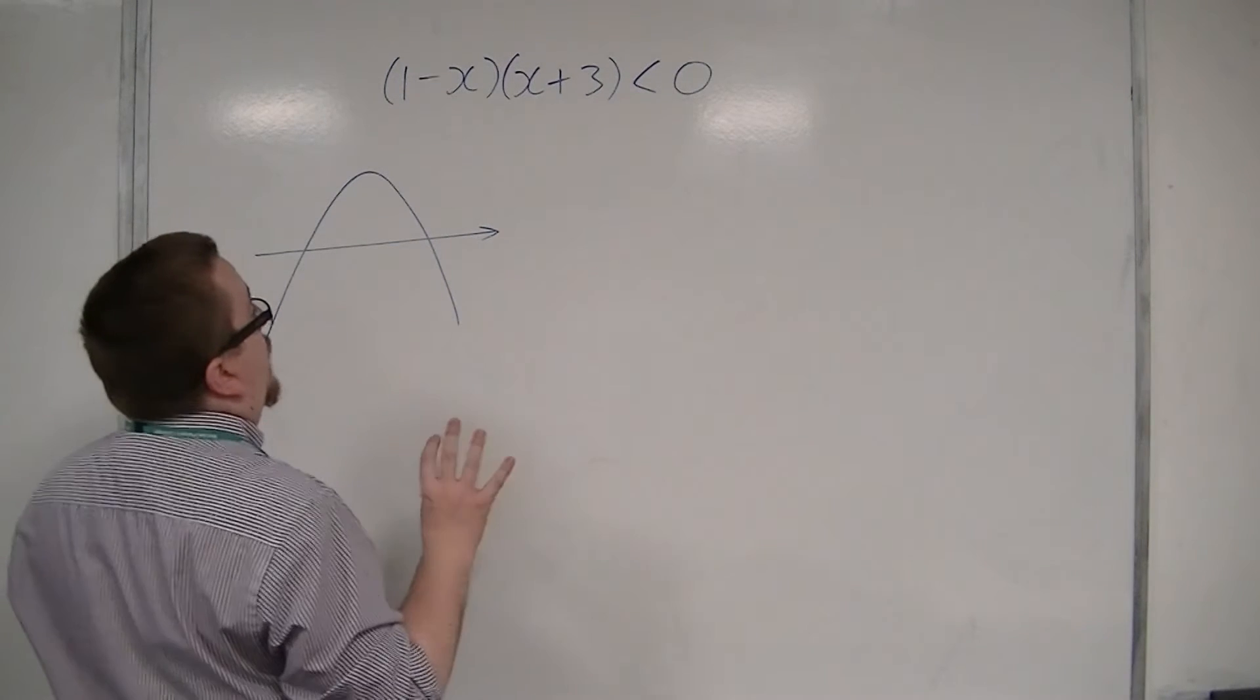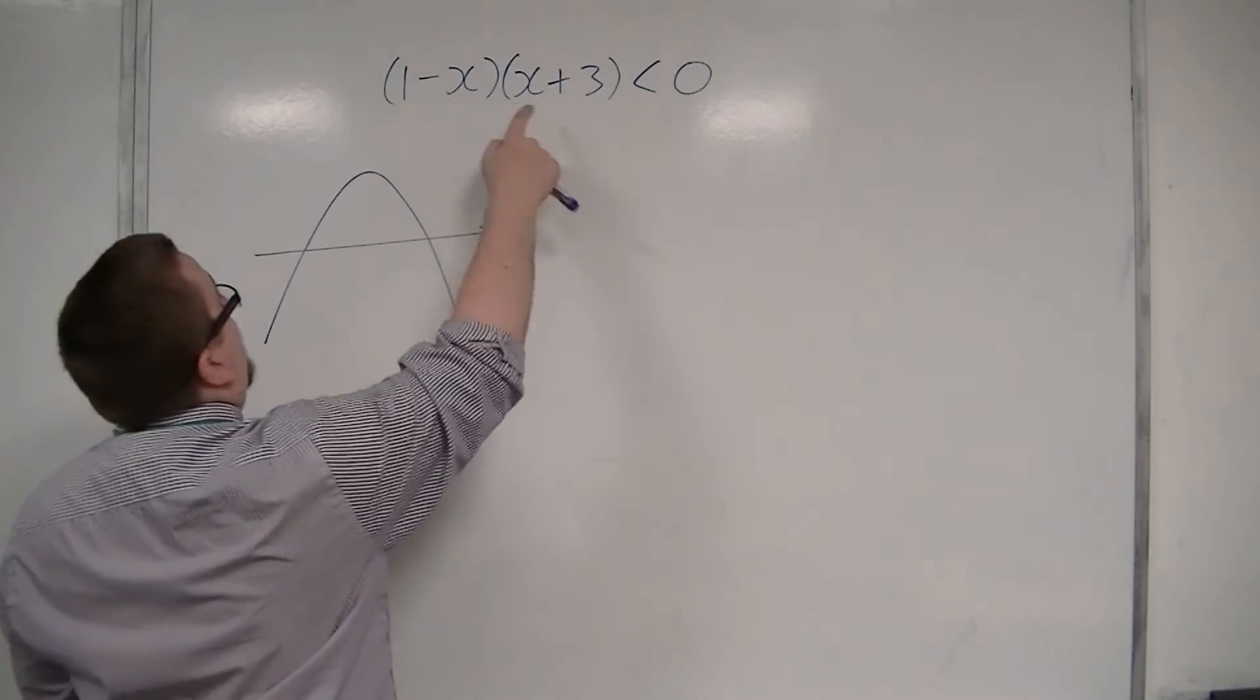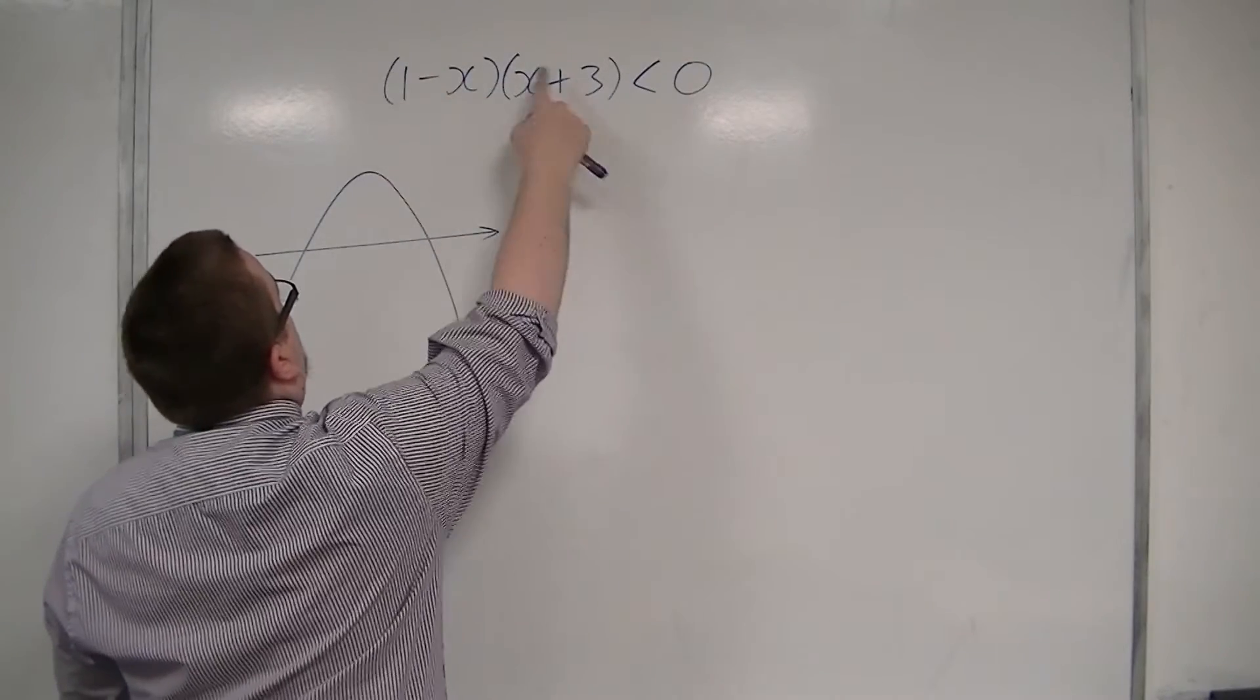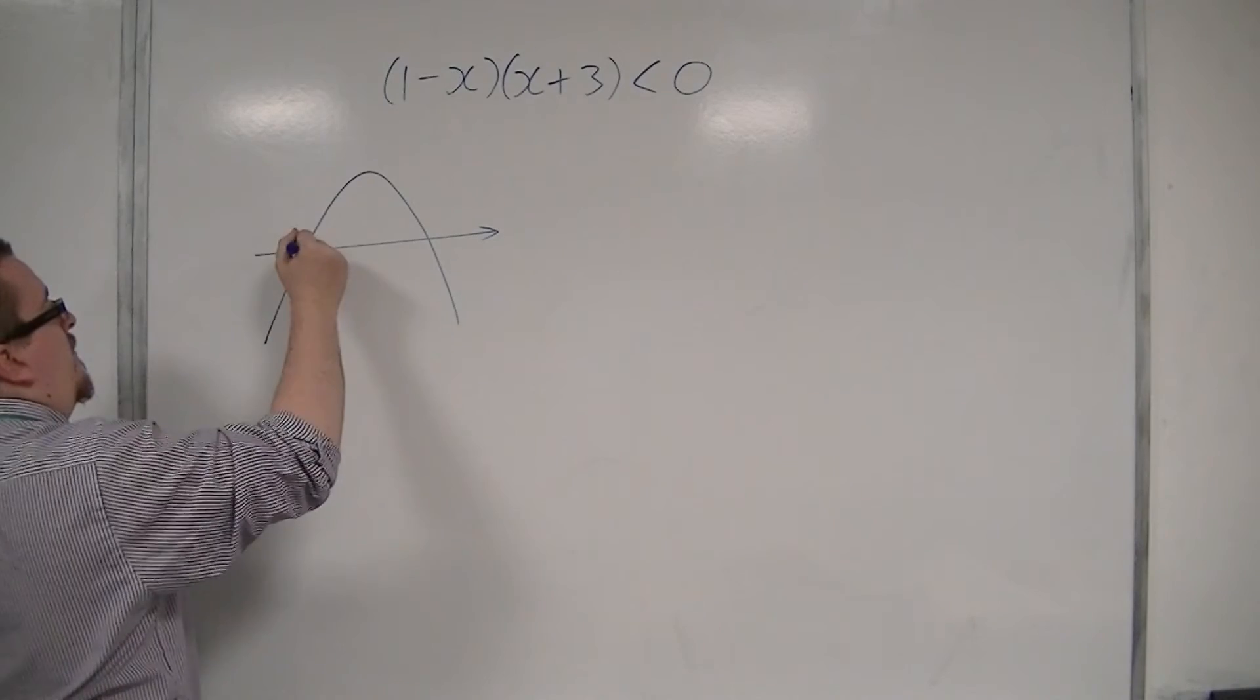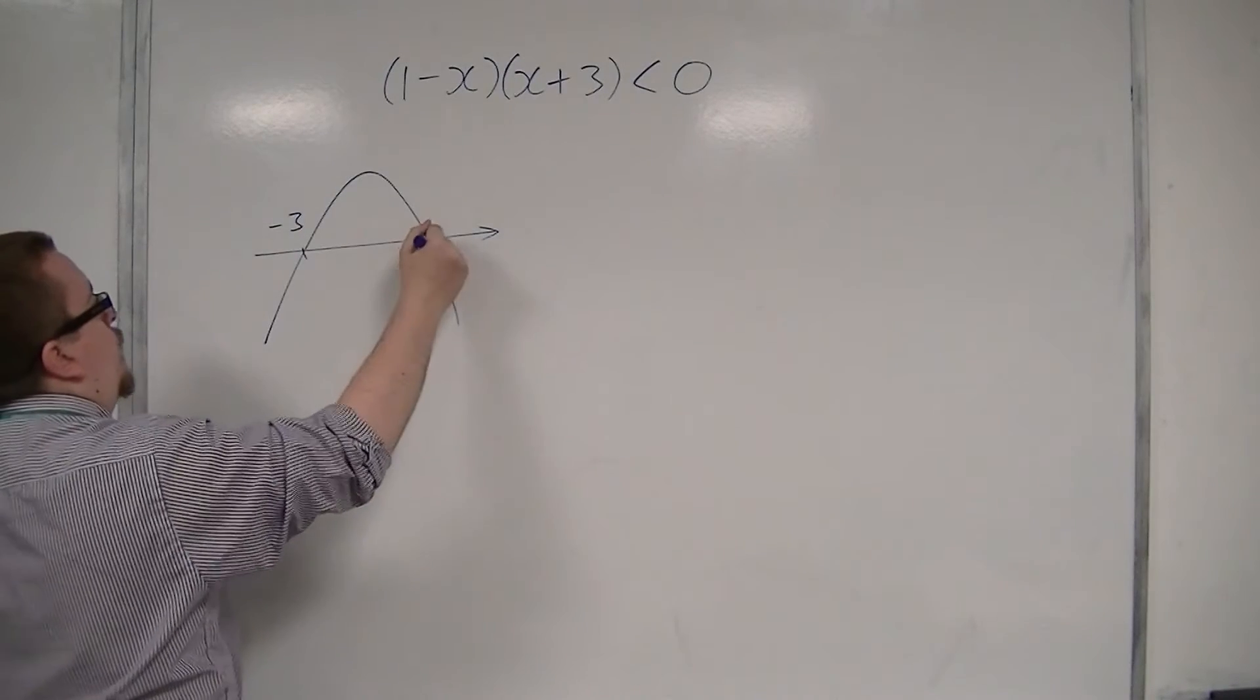So where is it crossing the x-axis? Well, it's crossing the x-axis at 1 and minus 3. So we have minus 3 there and 1 there.